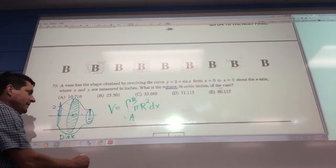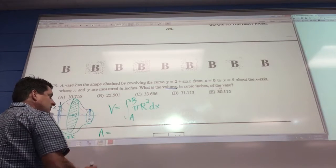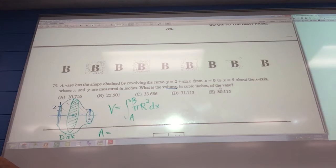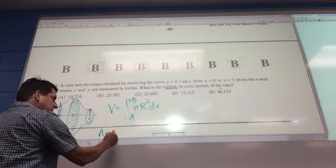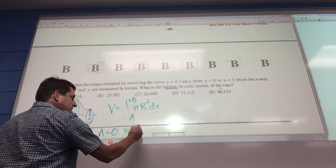And then all you have to do is identify what each of the things are. What's a? Zero. What's b? Five.